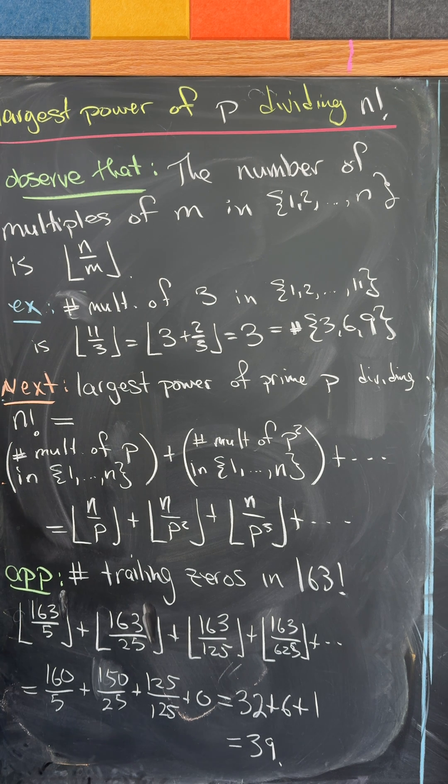So, for example, the number of multiples of 3 in the set containing 1, 2, 11 is obviously equal to 3 because you've got three numbers: 3, 6, and 9. But that's kind of equal to the floor of 11 over 3.